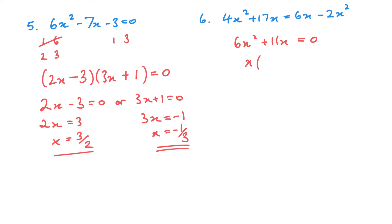Add the 2x squared, that's 6x squared minus 6x, so plus 11x equals 0. We can only factor it at the x, 6x plus 11, so x equals 0 or 6x plus 11 equals 0. So 6x equals minus 11, x is negative 11 over 6. There's my two answers.